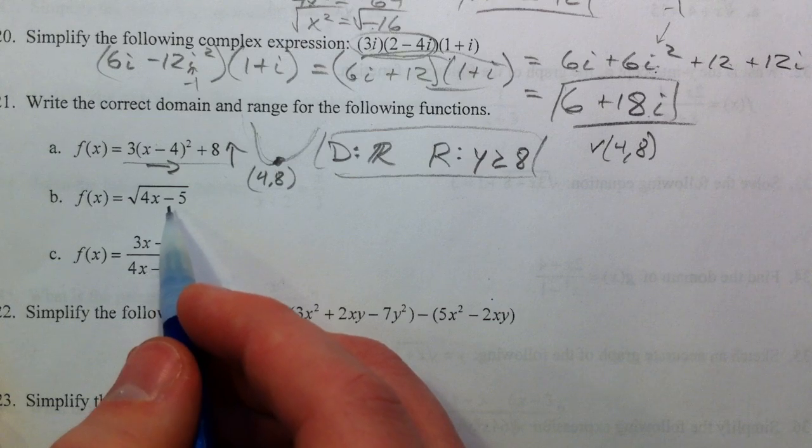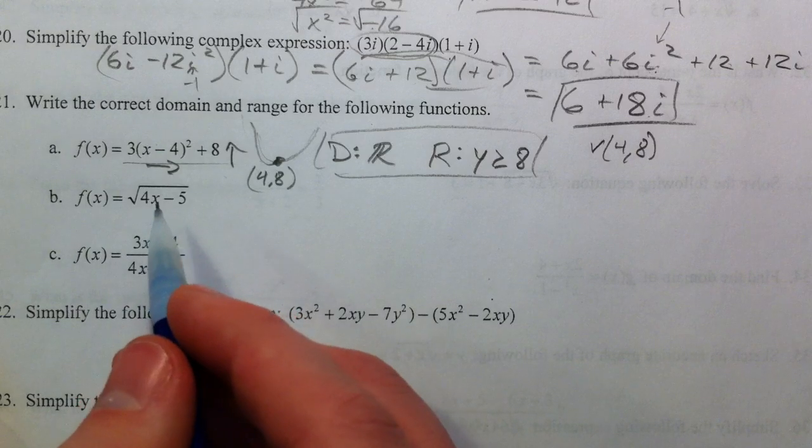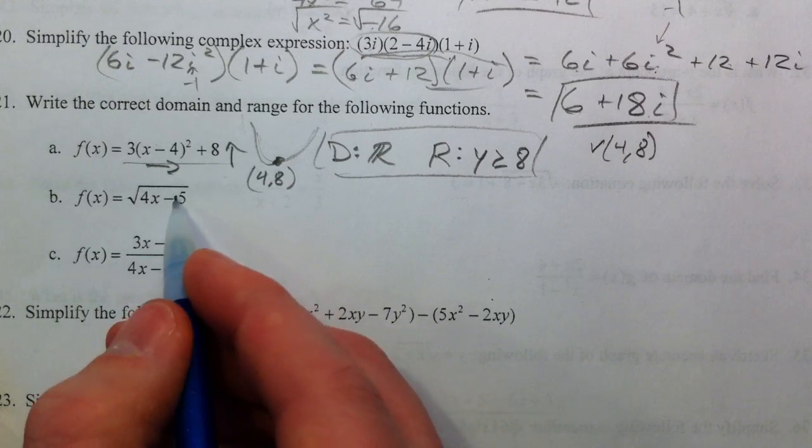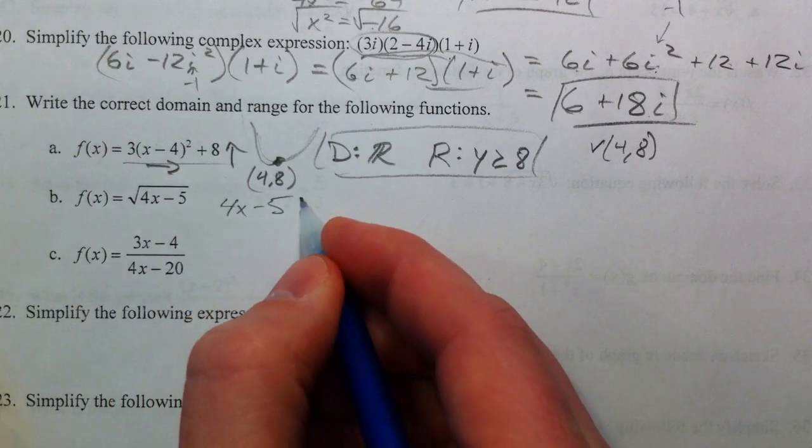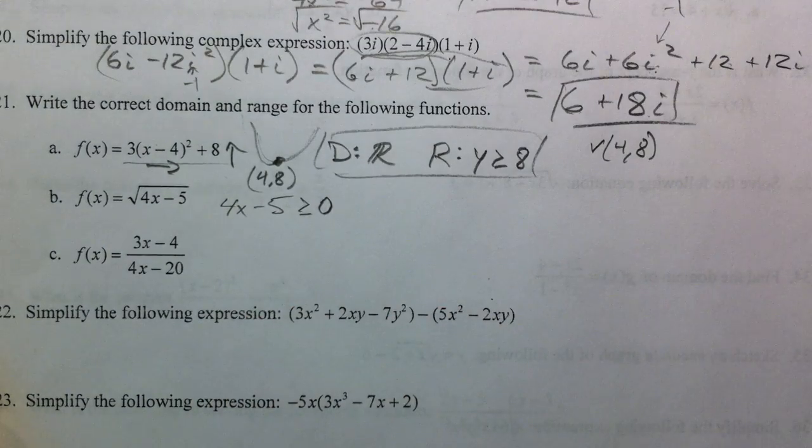With square roots, you have to worry about when you take the square root of a negative. Because although we can get imaginary numbers, we don't get real numbers, and so they don't show up on the graph. And so we want 4x minus 5, what's underneath the radical, all those numbers we want to be greater than or equal to 0, so that we can take the square root of it.